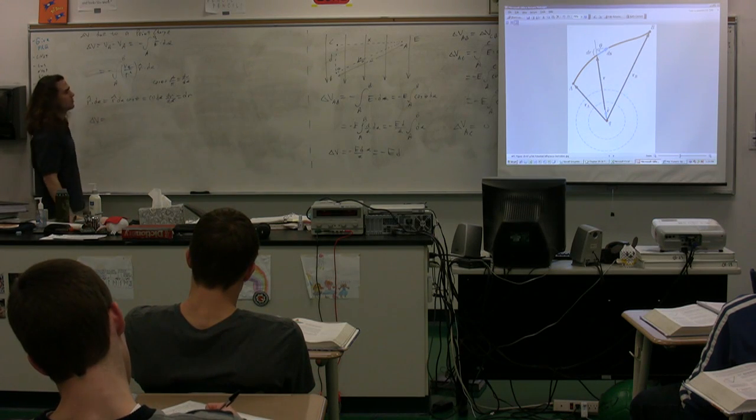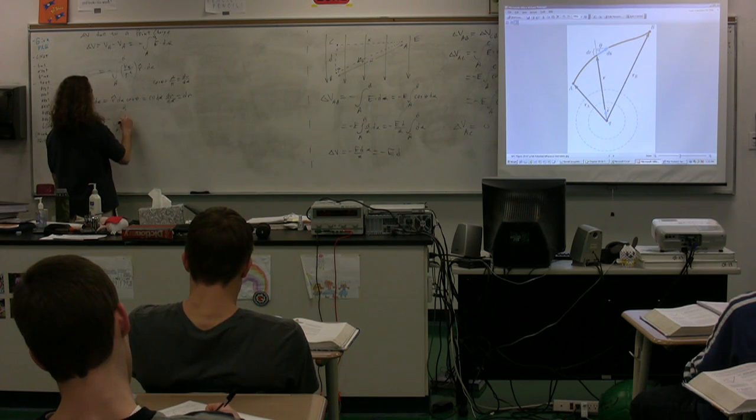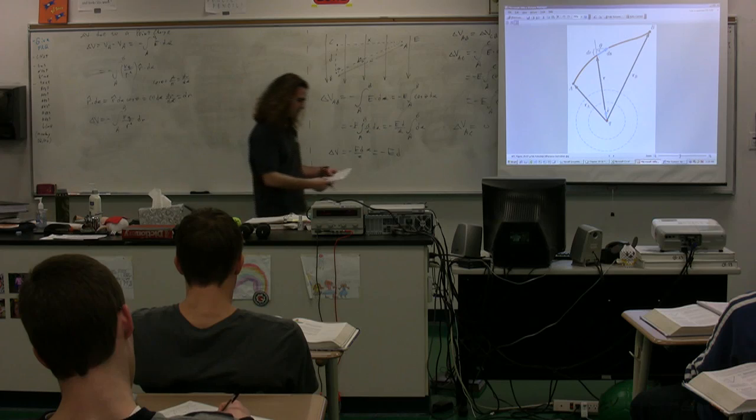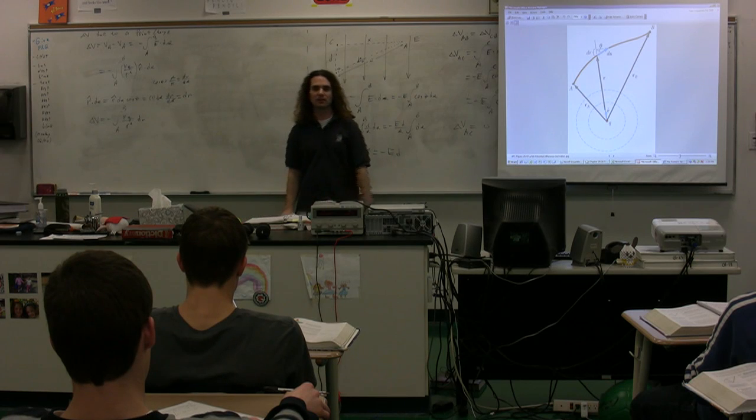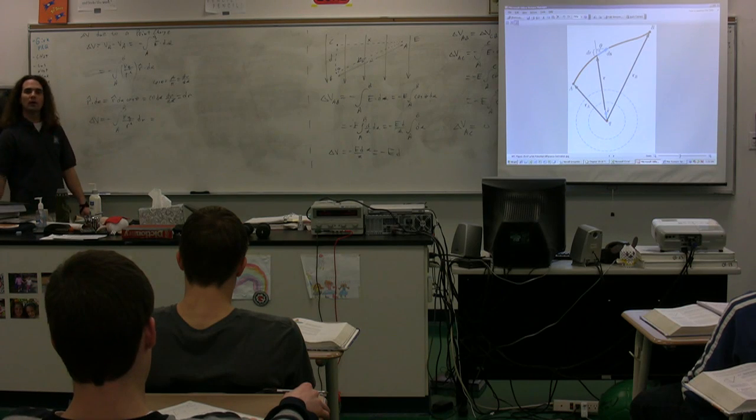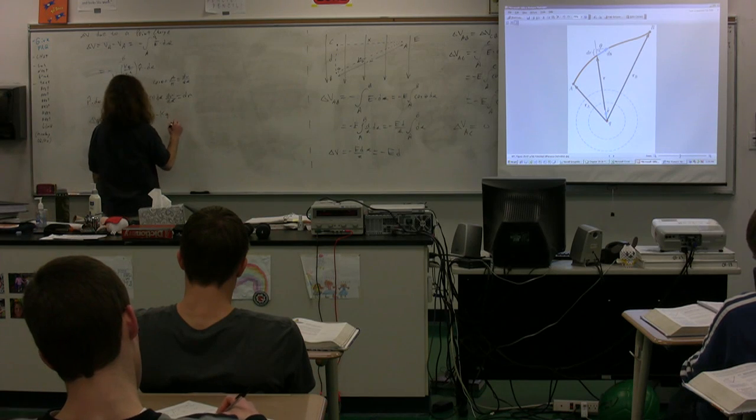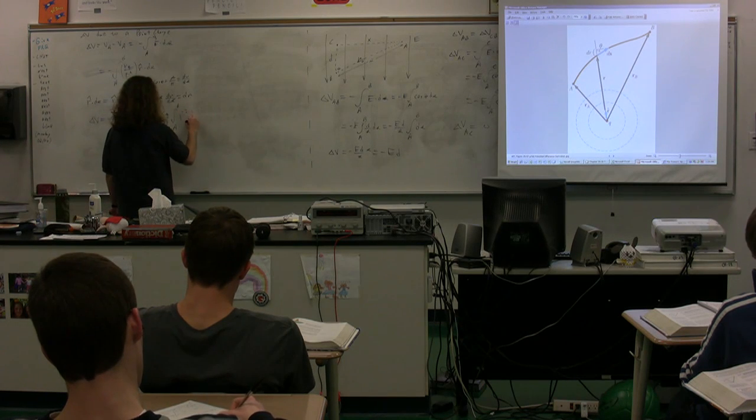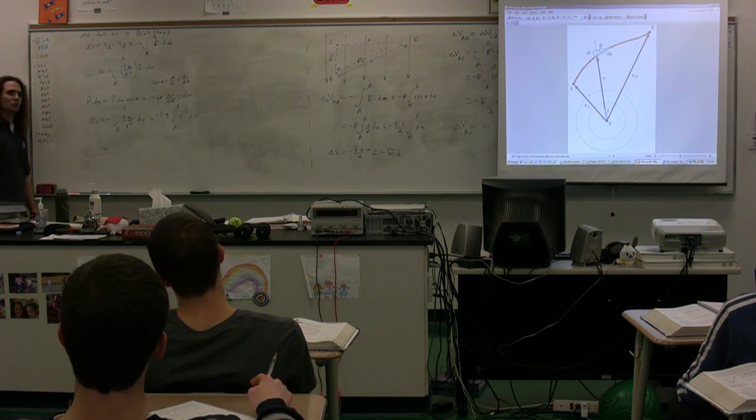So we have the change in electric potential from A to B is equal to the negative of the integral from A to B of kq over r squared, just with respect to dr. Work with that integral for me a little bit here. John? You can take out k and q. K and q. So we have negative k times q times the integral from A to B. And it's easier to do the integral if we have r to the negative 2 with respect to r. Now, what is the integral of r to the negative 2 power?